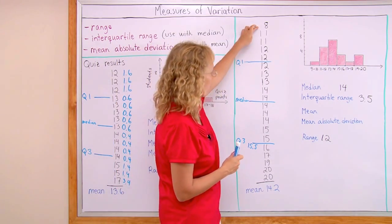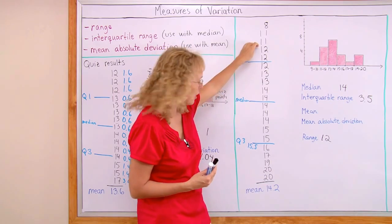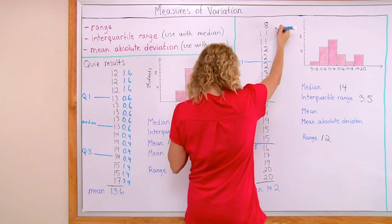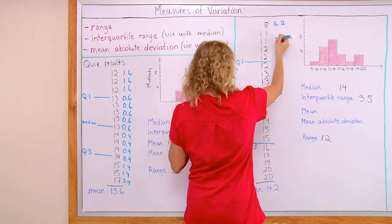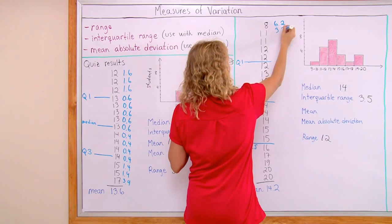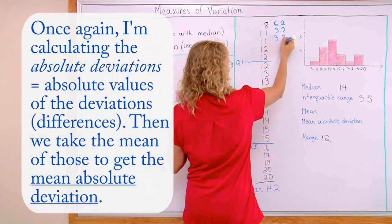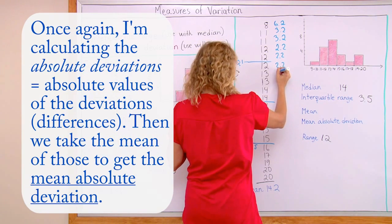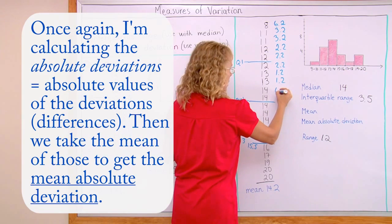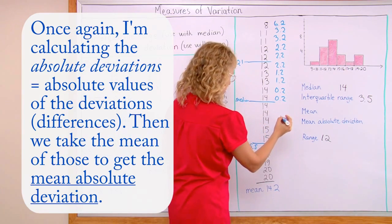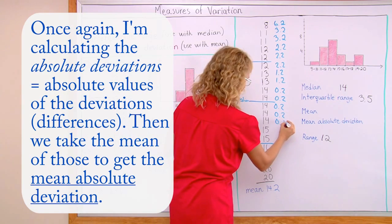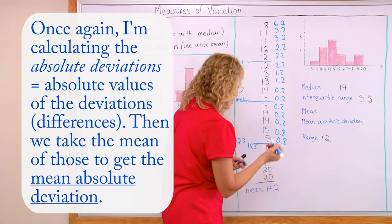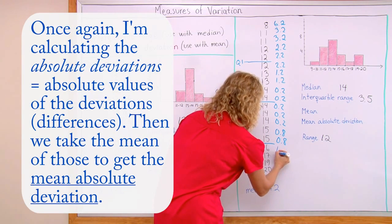The mean was 13.6. Over here we do the same. Look at the difference between each data value and the mean. So here we get 6.2, 5.2, 2.2. Then 1.2. Here's 0.2. Then 15 and 14.2 is 0.8. The difference is 0.8. The positive difference again. Here it would be 1.8. 2.8.